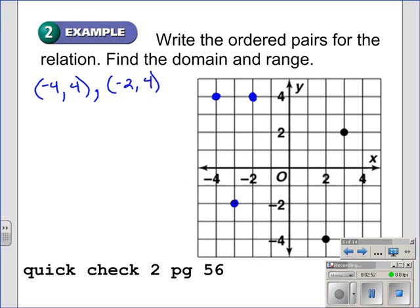Moving on to this third point down here, to the left three, and down two. So that would give us negative three for the x-value, and negative two for the y-value.